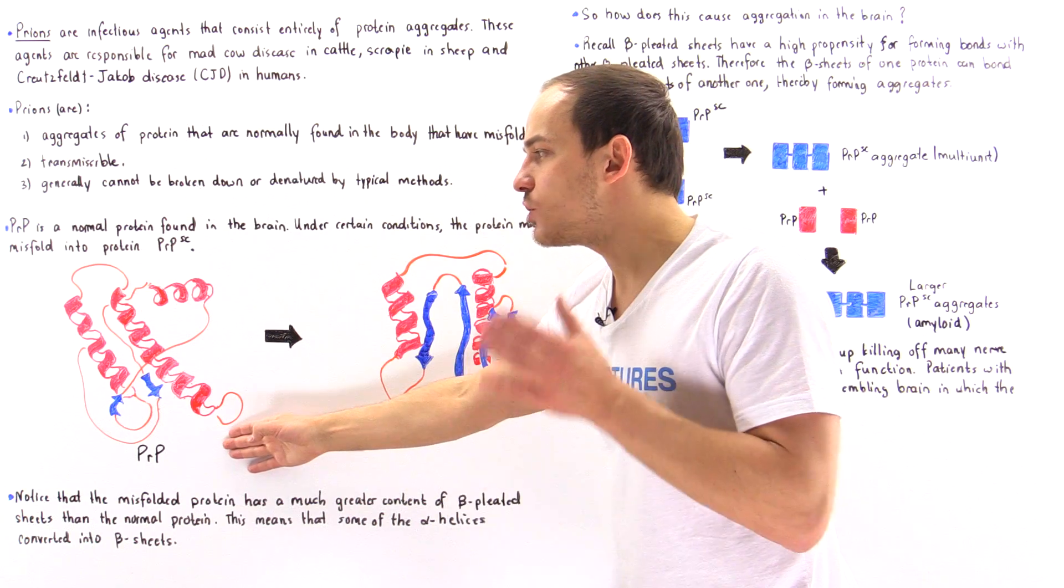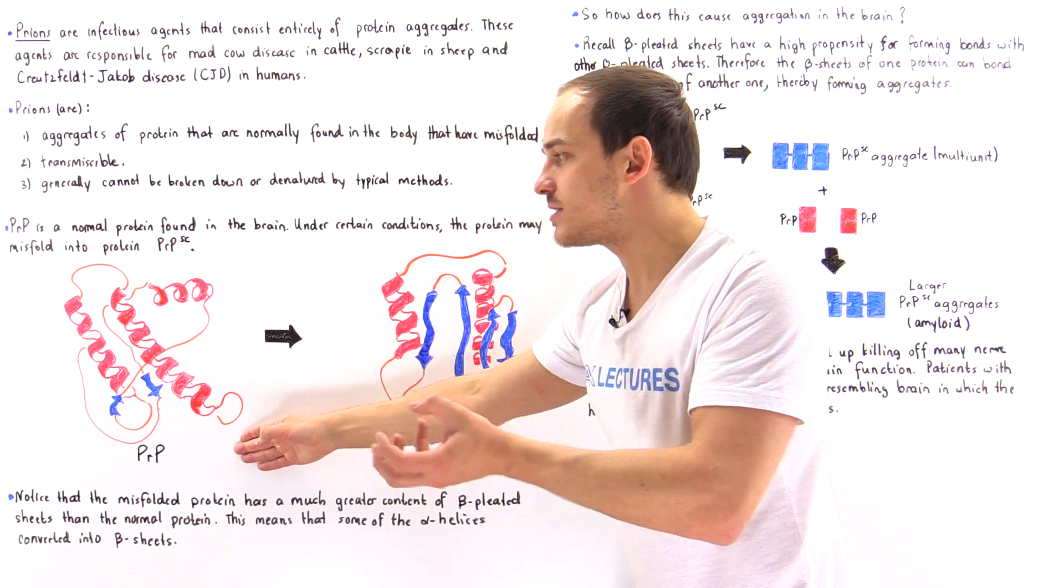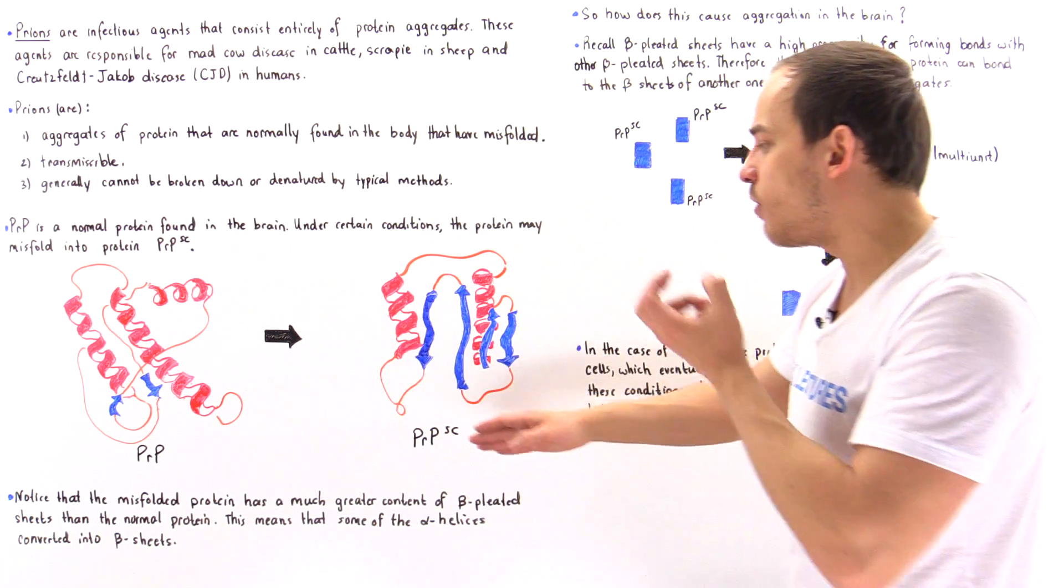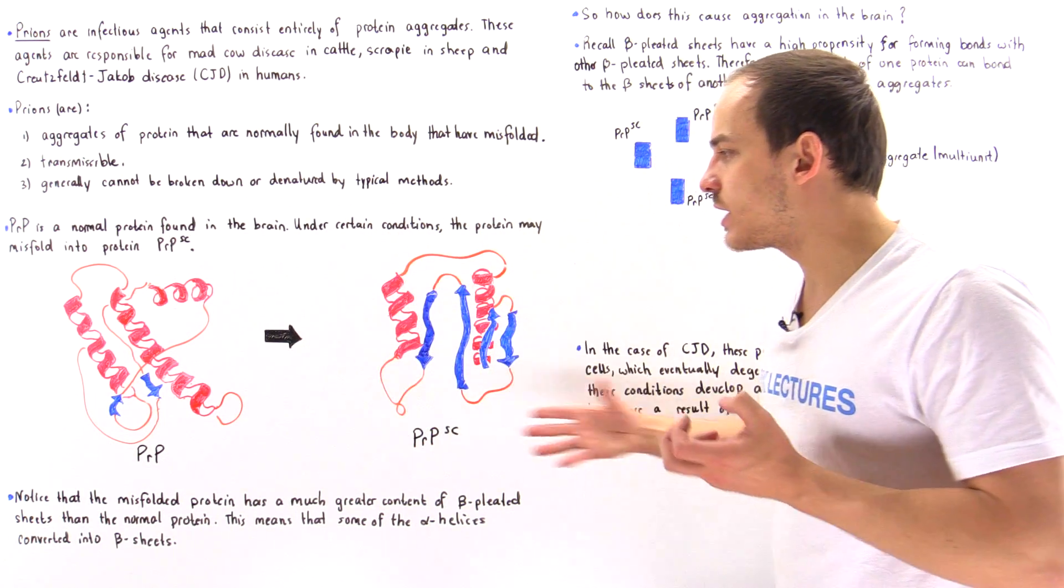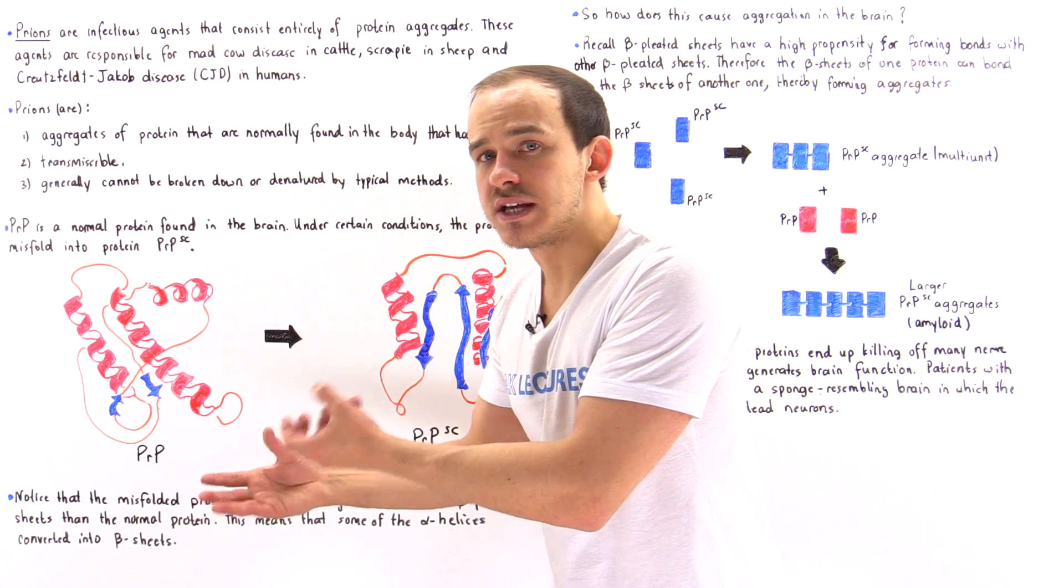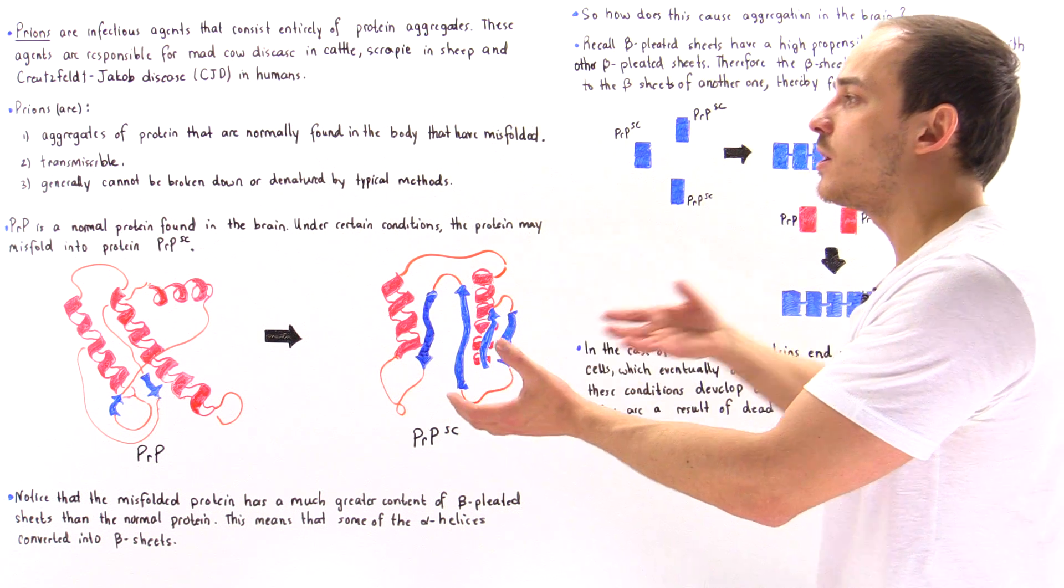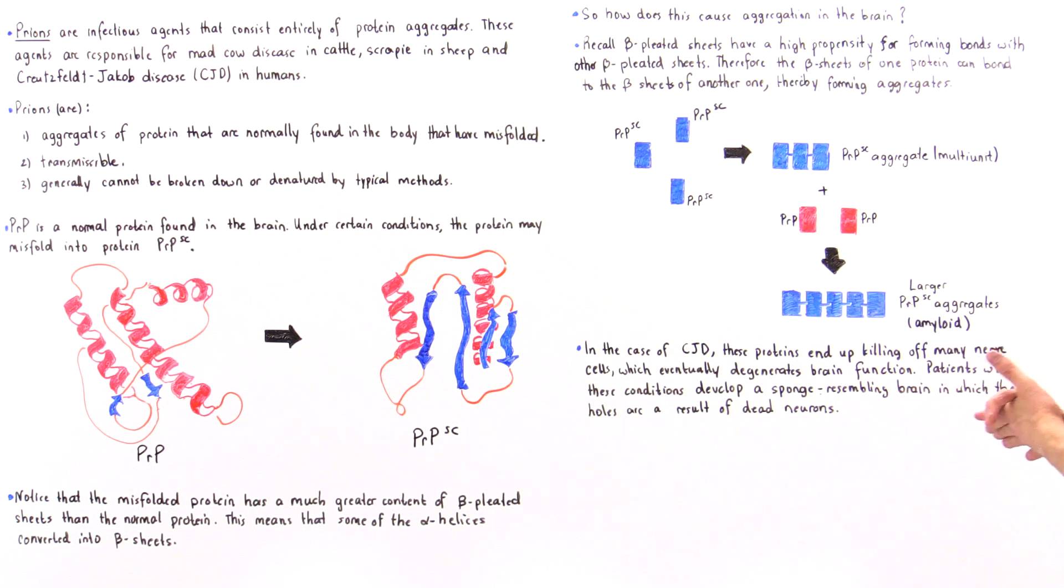If this protein that normally appears in the brain cells of our body misfolds into this protein, it can form aggregates with other proteins, and that will eventually form even larger fibers, as we'll see. Let's take a look at the following diagram.